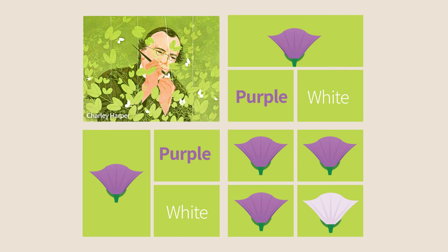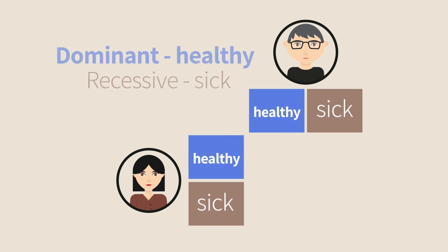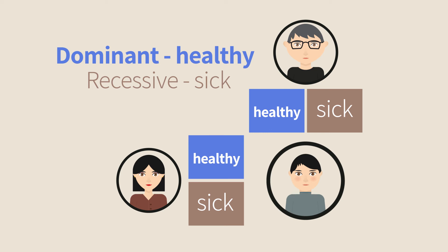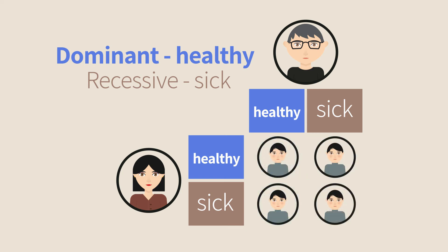There are, for example, many human genetic diseases that are caused by a recessive allele. When both parents carry one such allele, they are not affected because they also have a dominant healthy allele. But the baby will be affected if it inherits the recessive allele from both parents. The probability that the father will contribute the sick allele is 50%, and the probability that the mother will contribute it is also 50%. The product of these probabilities is 25%, and this is the probability that the baby will be affected by the disease.